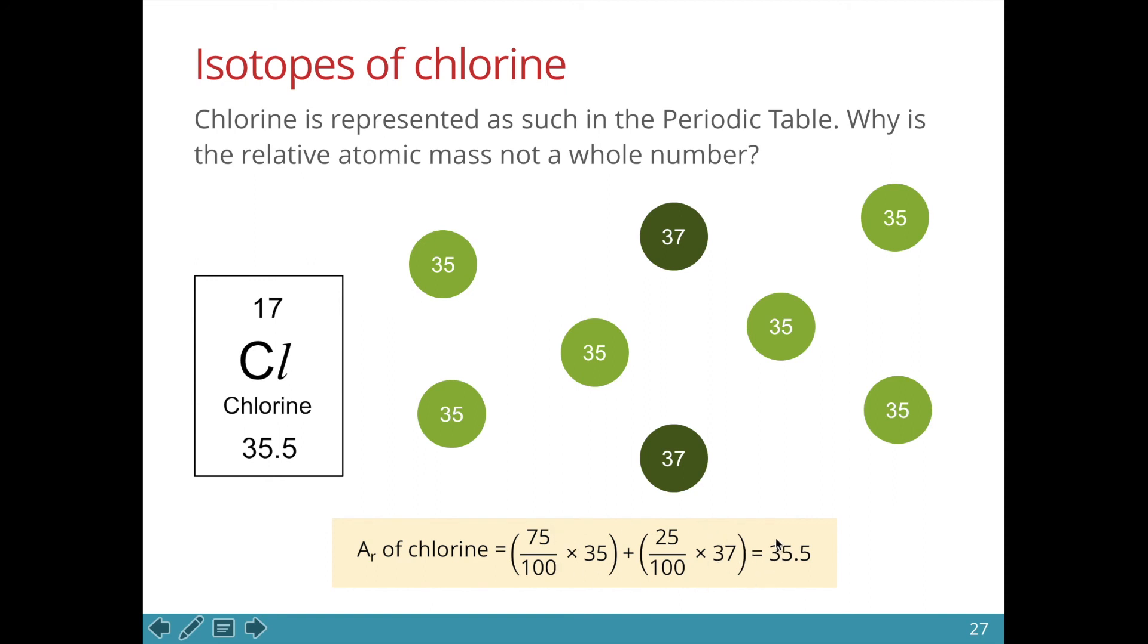So we take the average and we end up with a value of 35.5. This would explain why certain relative atomic masses are not whole numbers.